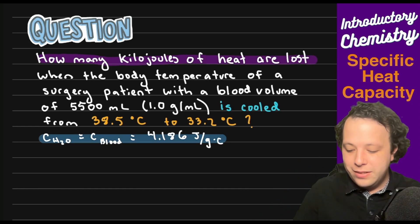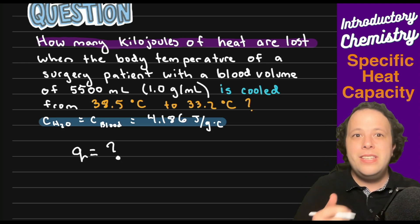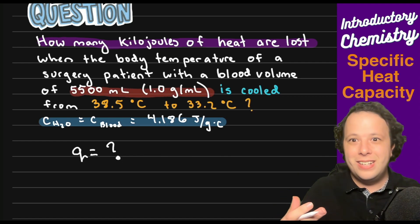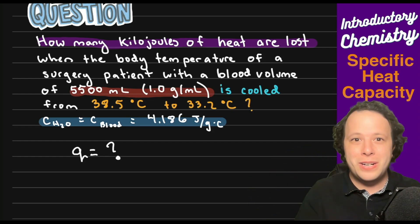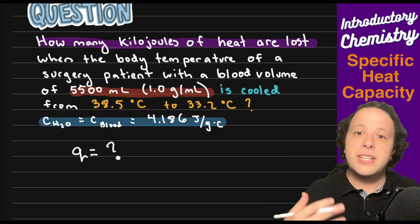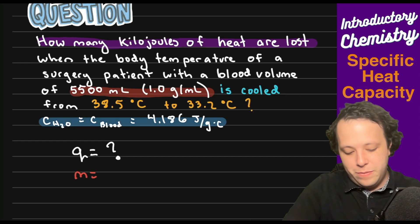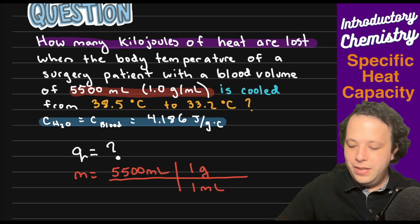Right off the rip it's telling you exactly what it is that we are trying to find, so we can see how many kilojoules of heat are lost. Q, we're going to put a little question mark next to it to let us know this is what we're trying to find. It says when the body temperature of a surgery patient with a blood volume of 5500 milliliters is cooled. We have 5500 milliliters of blood. Blood is mainly made up of water so we can assume that this is the same equivalent as water. We will have to use that density to convert to grams because we will need a mass.